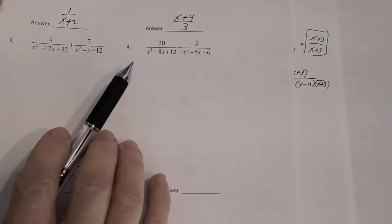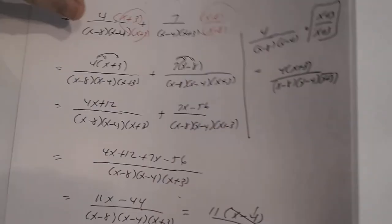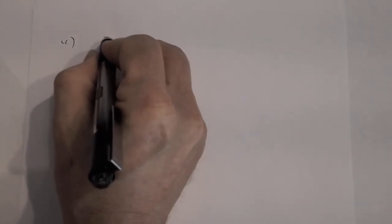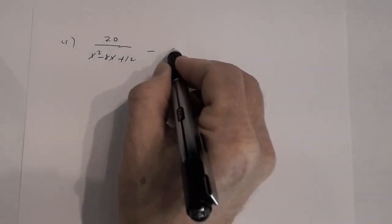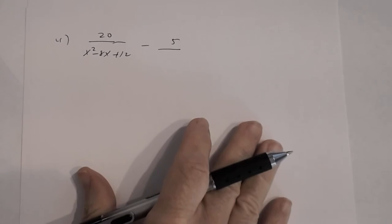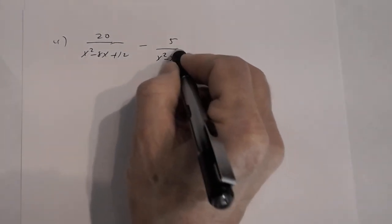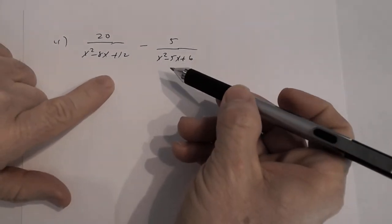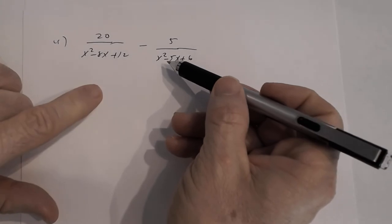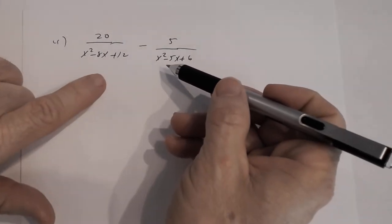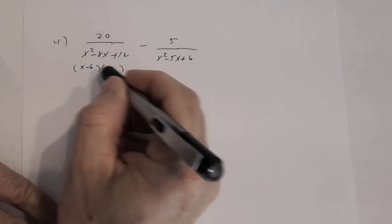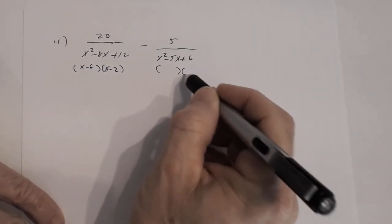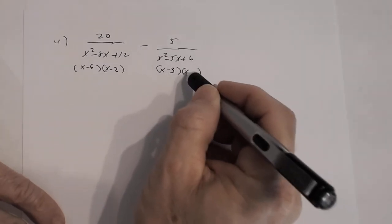Now let's look at number 4. We have 20 divided by x squared minus 8x plus 12, and we're subtracting 5 divided by x squared minus 5x plus 6. Again, the denominators are not the same and not opposites, so we've got to find the LCD. Factoring: x squared minus 8x plus 12 becomes x minus 6 times x minus 2, and x squared minus 5x plus 6 becomes x minus 3 times x minus 2.